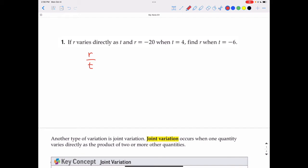Since I'm going to do R varying directly as T and R is negative 20 when T equals 4, I'll have negative 20 over 4. Set that equal to, we're supposed to find R when T equals negative 6. And there's my initial setup.